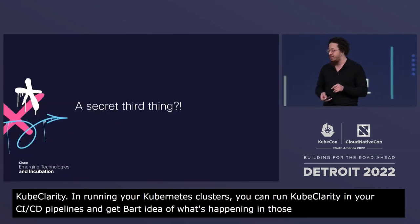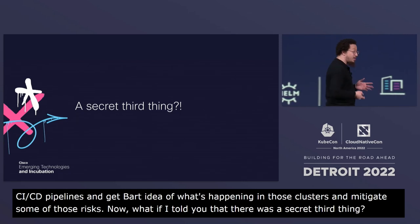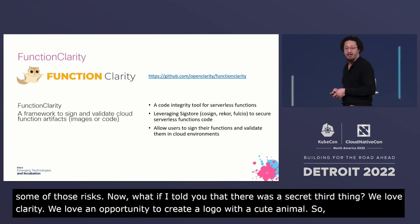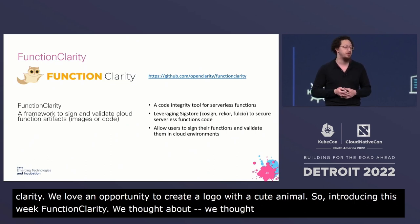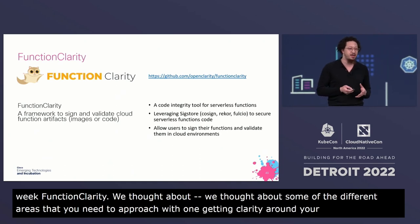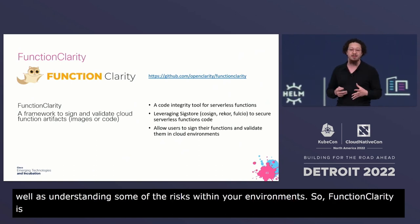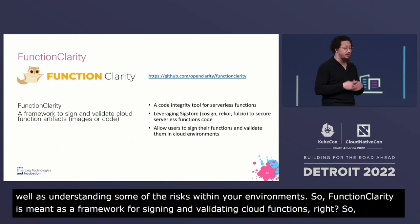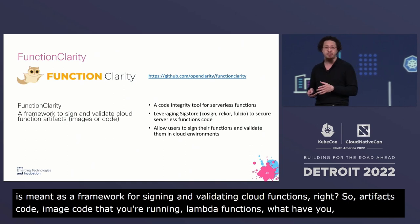What if I told you there was a secret third thing? We love clarity, and we love an opportunity to create a logo with a cute animal. So introducing this week: FunctionClarity. It's meant to bring clarity around your running code and understanding risks within your environments. FunctionClarity is a code integrity tool for serverless functions — artifacts, image code, Lambda functions, across different cloud providers.